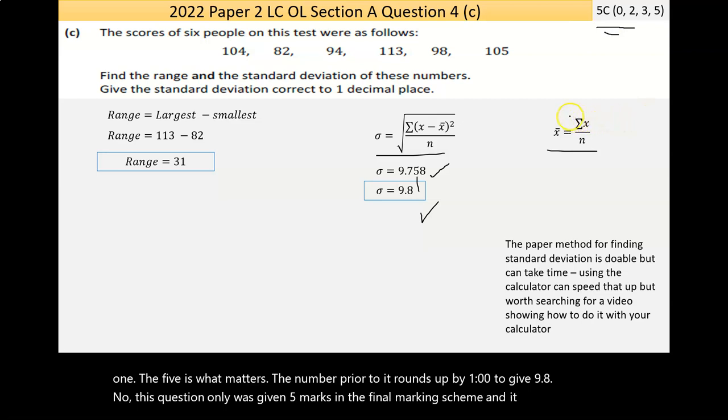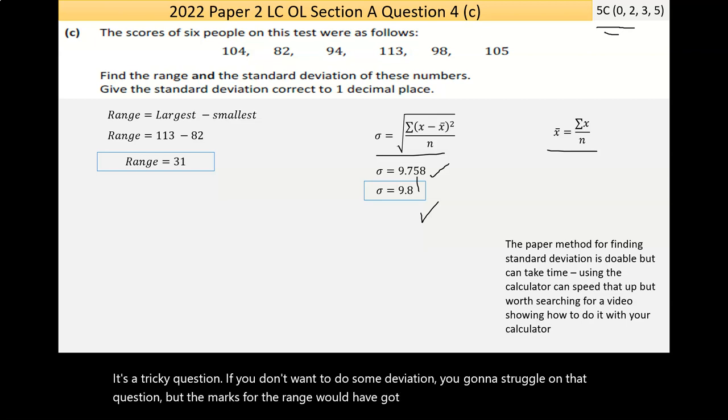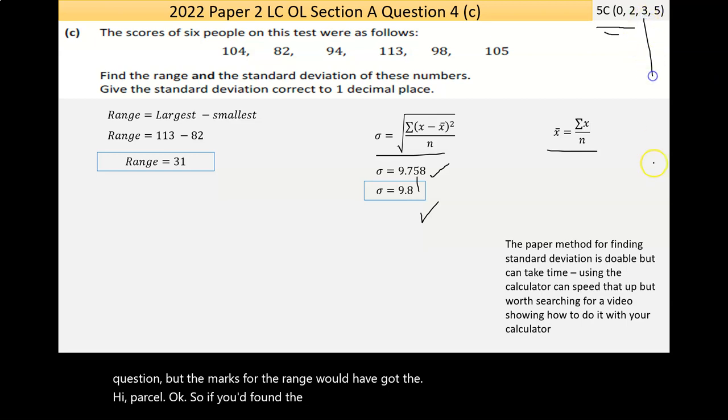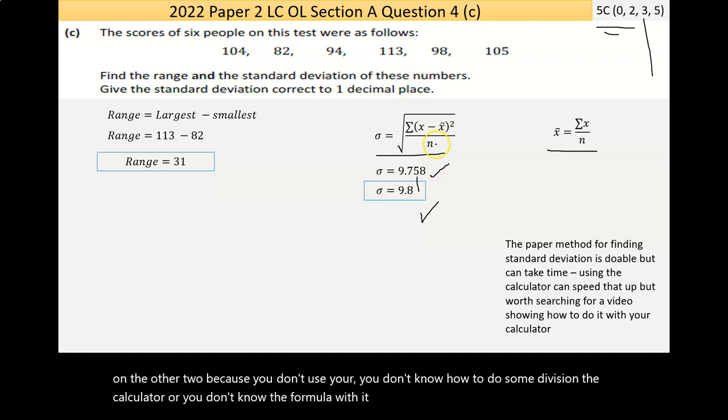Here's the formula for mean and standard deviation of a small piece of data. I've got the standard deviation here to three decimal places. If I round that, the five is what matters, the number prior to it rounds up by one to give 9.8. This question only was given five marks in the final marking scheme. It's a tricky question. If you don't know how to do standard deviation, you're going to struggle. But the marks for the range would have got the high partial, so if you'd found the range you would have got three marks.